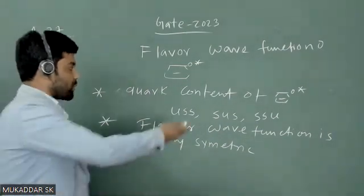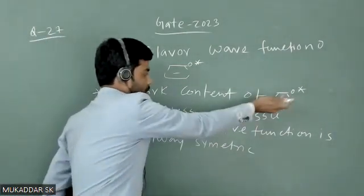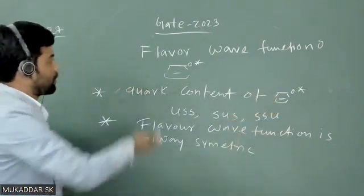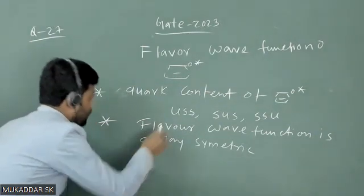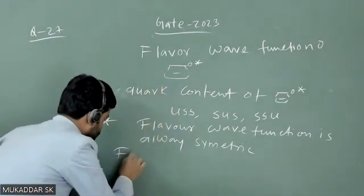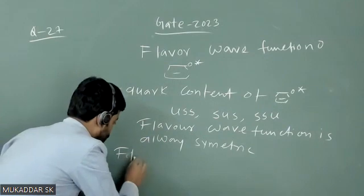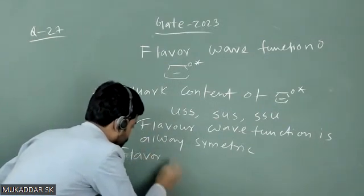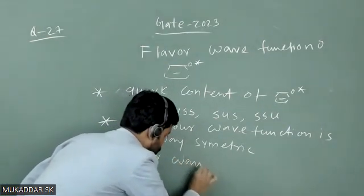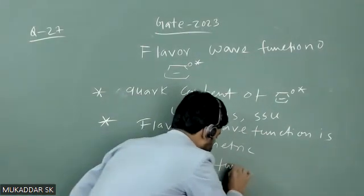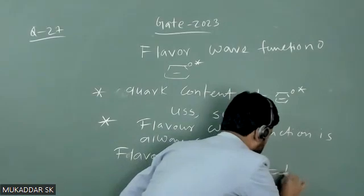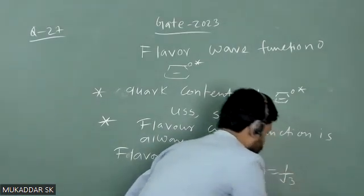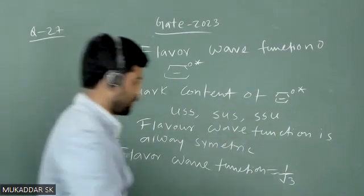So you have three possible permutations for this flavor wave function, and it should be symmetric. So that flavor wave function will be 1/√3, and then